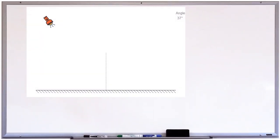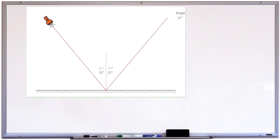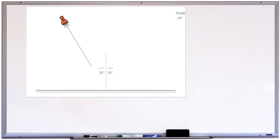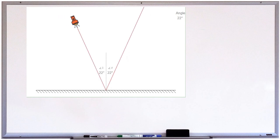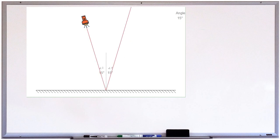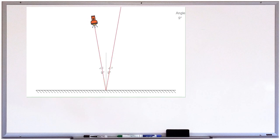Children, let us do one activity. Just observe here. The ray is incident at angle 37 degrees and reflects at 37 degrees only. Angle I is equal to 28 degrees where angle R is also 28 degrees. Angle I is 22 degrees and angle R is also 22 degrees. Here angle I is equal to angle R — 1 degree. Angle I is equal to 24 degrees.